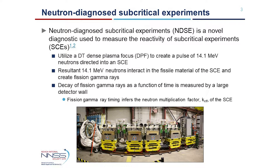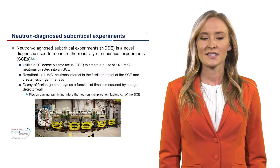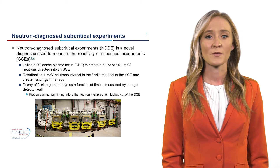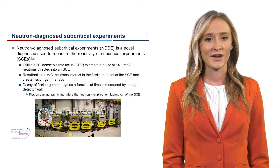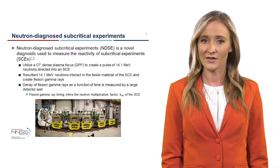NDSC utilizes a deuterium-tritium dense plasma focus to create a pulse of 14.1 MeV neutrons which are directed into a subcritical experiment. These neutrons interact in the fissile material, creating fission neutrons and gamma rays. Since the temporal die-away rate of the fission gamma rays is directly dependent on the neutron multiplication, we can leverage time-of-flight separation to measure the decay of the fission gamma rays as a function of time and infer the reactivity of the subcritical experiment.